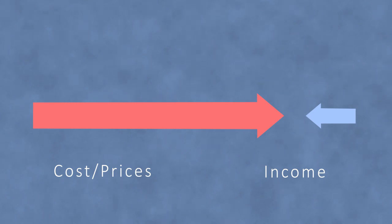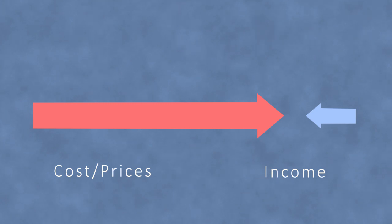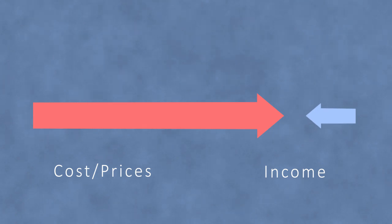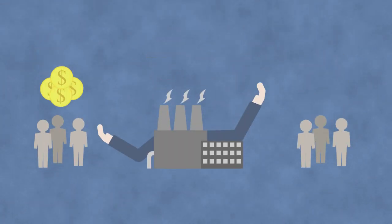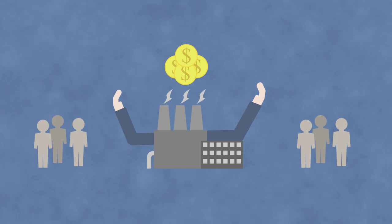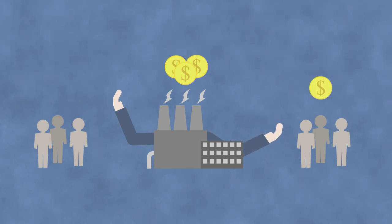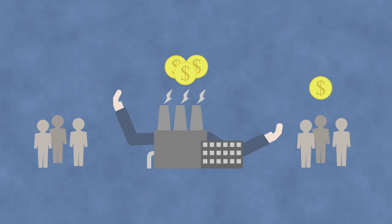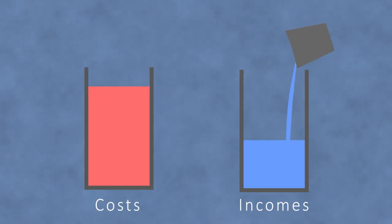There are many reasons for this inherent deficiency of consumer income — for this gap between the flow of costs and hence prices on the one hand, and the flow of consumer incomes on the other. The main cause has to do with the fact that businesses have to recover more money from the public, mainly to meet machinery costs such as capital loan repayments, depreciation, and maintenance costs, than they simultaneously distribute to the public in the form of wages, salaries, and dividends.